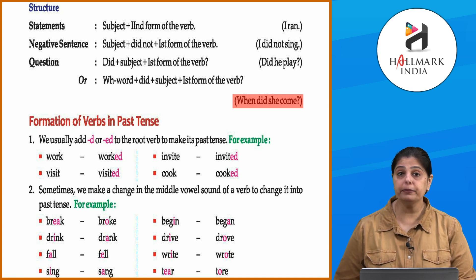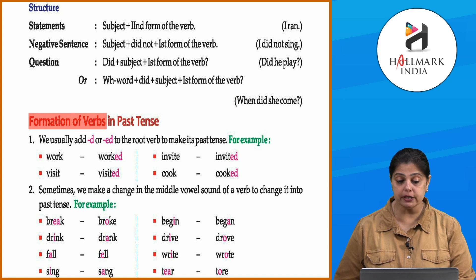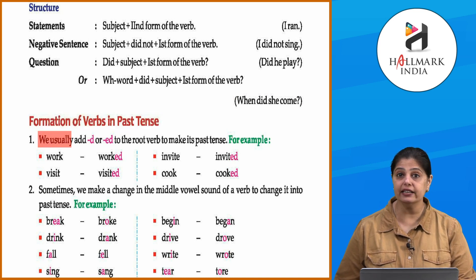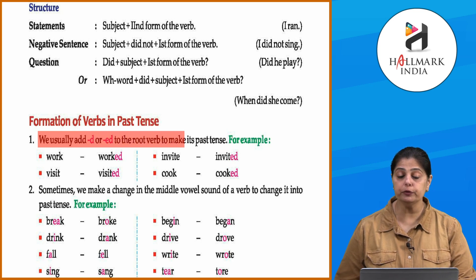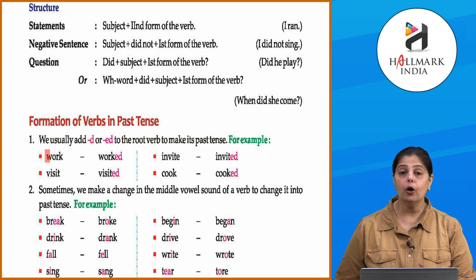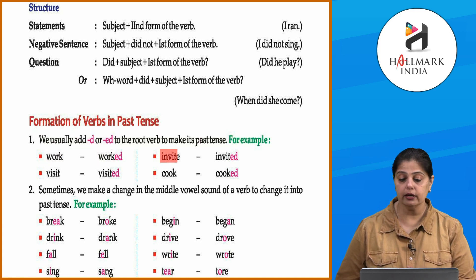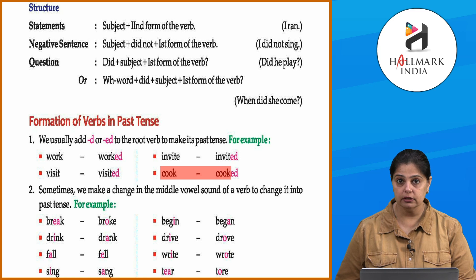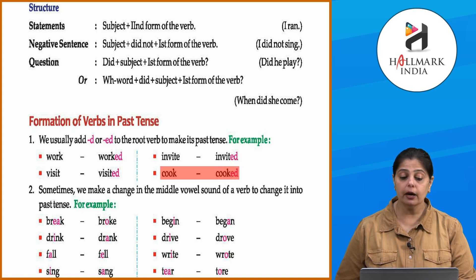Now let's look at the formation of verbs in past tense. First, we usually add -d or -ed to the root verb to make its past tense. For example: work → worked, invite → invited, visit → visited, cook → cooked.